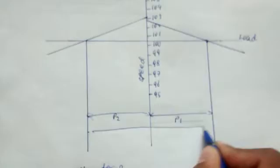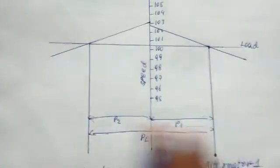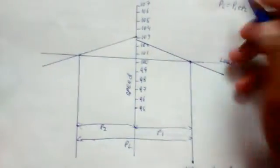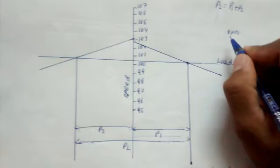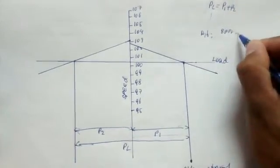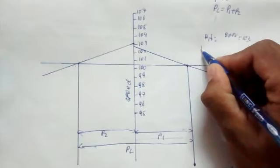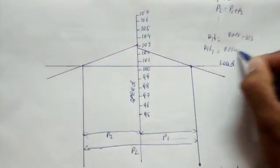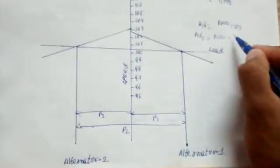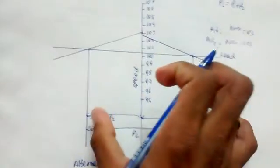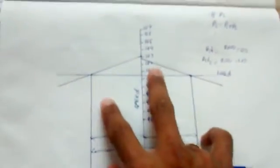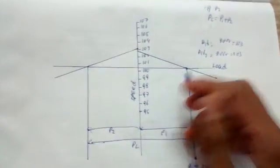Total voltage is equal to P1 plus P2, so PL equals P1 plus P2. Load is equal to the LR share. We produce 200 volts — for example, Alternator 1 produces 200 volts and Alternator 2 produces approximately 201 volts, which is nearly equal voltage. Because the speed is nearly equal, the load share LR is also nearly equal.